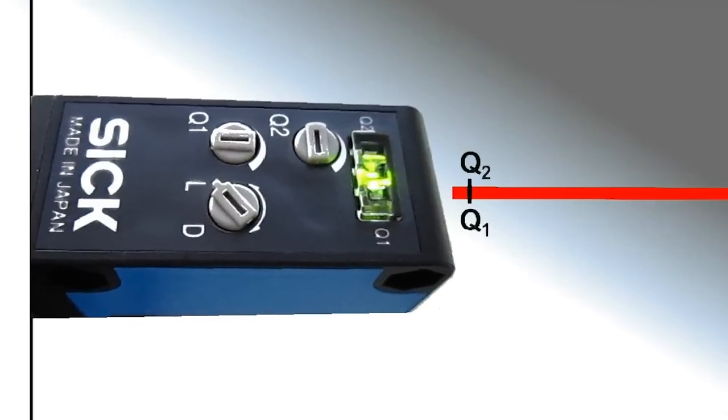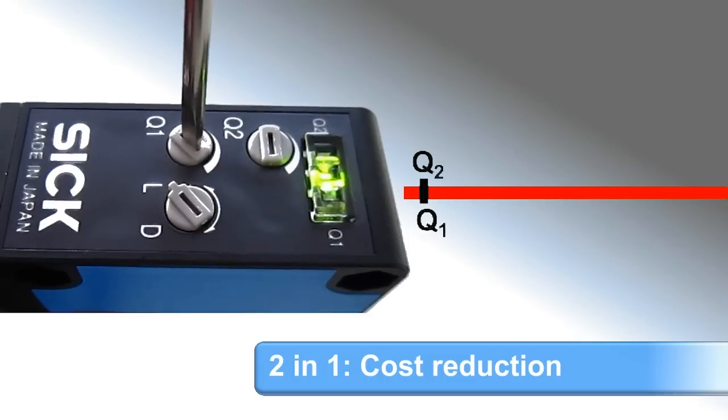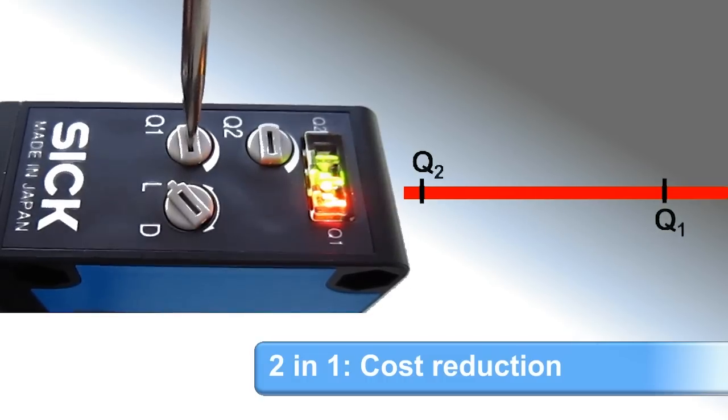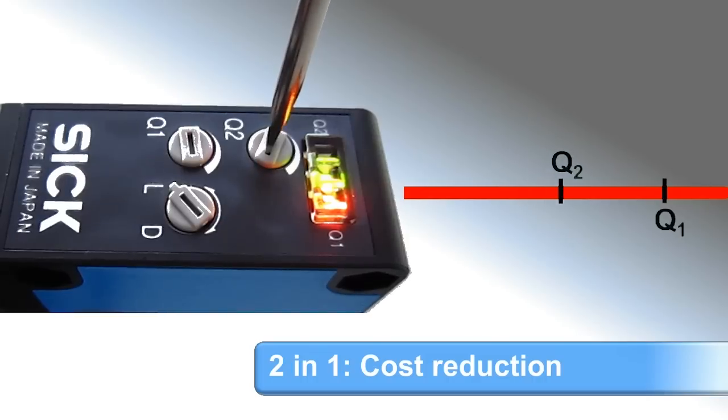Another version has two independent potentiometers and two LEDs. This means that we can independently set two sensing ranges, as well as display their status via the LEDs.